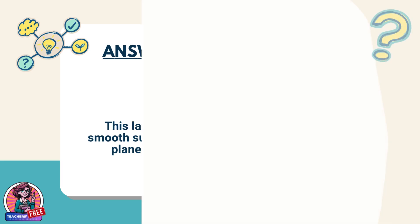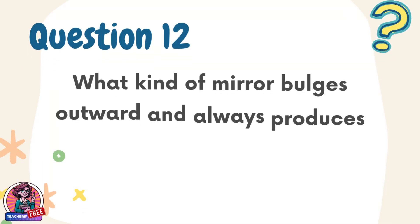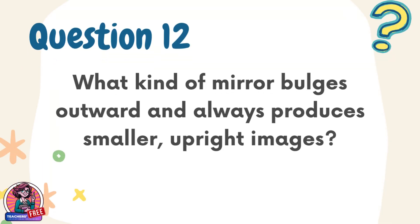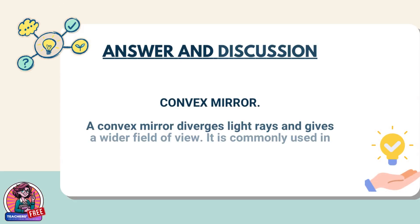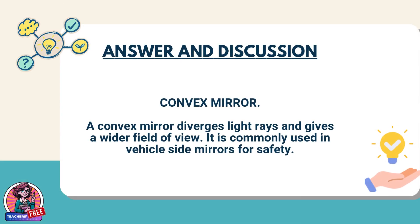Question 12. What kind of mirror bulges outward and always produces smaller, upright images? Answer: convex mirror. A convex mirror diverges light rays and gives a wider field of view. It is commonly used in vehicle-side mirrors for safety.